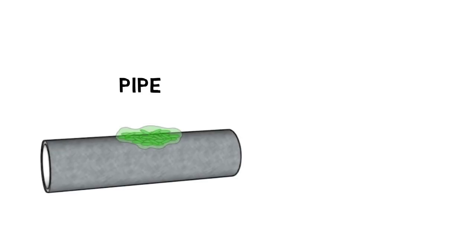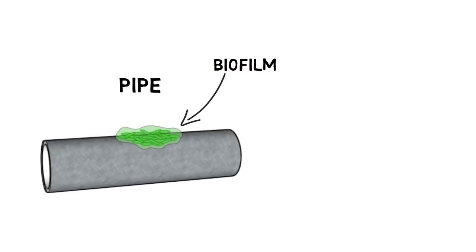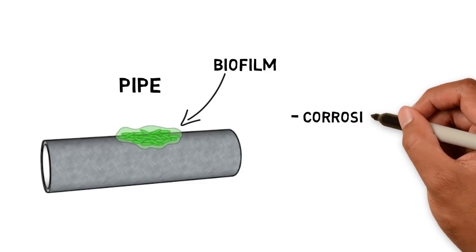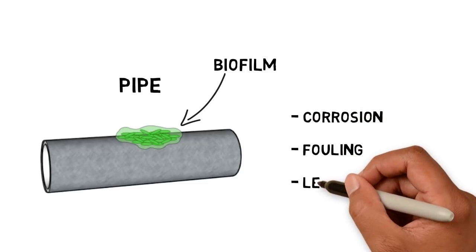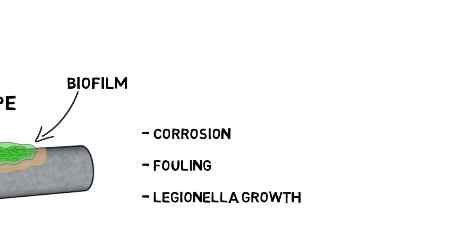We normally encounter biofilm bacteria as a slime attached to pipes, shower heads or chillers. As it causes corrosion, fouling or can even lead to legionella growth, biofilm bacteria is considered to be harmful.